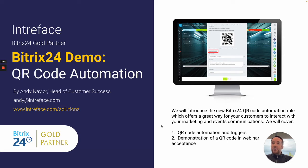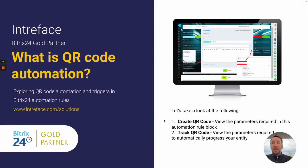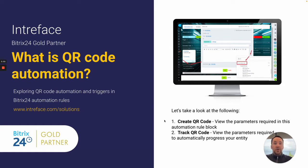It allows us to confirm attendance by scanning a QR code in an email. So what is QR code automation inside Bitrix24? Bitrix have now enabled the ability to create a unique QR code inside a lead, inside a deal, or inside the smart process automation module.